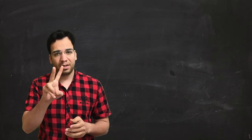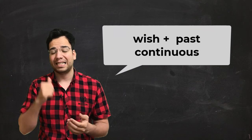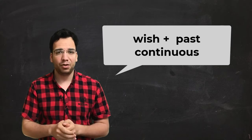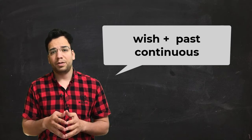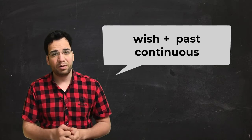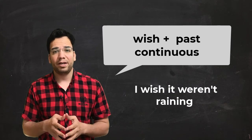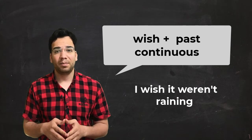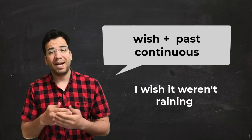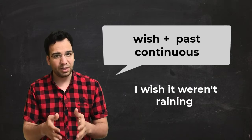Let's speak about the second form of wish. In the second form, wish usually comes with past continuous — wish plus past continuous. We use it to say that we want to be doing a different activity in the present or future. For example: I wish it weren't raining now — but it is raining. We use wish and past continuous when we want to be doing a different activity in the present or future.